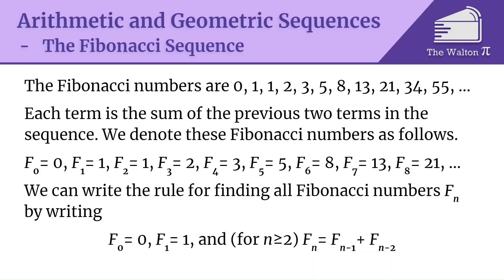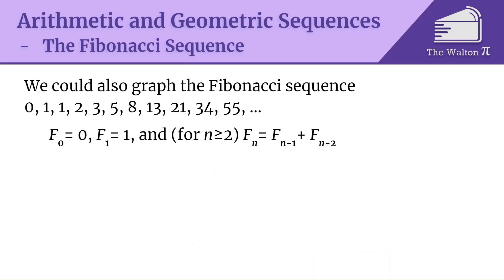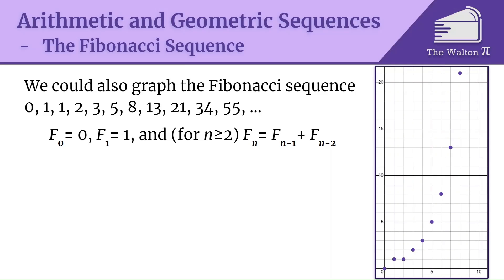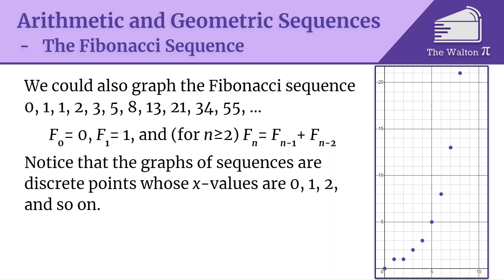We are just writing these down using our rule for what these different terms are representing. We can also graph the Fibonacci sequence, where if we graph this we get this plot for the first several points, and you might notice that graphs of sequences are discrete points. We have a whole bunch of different points, but we don't have any line segments that connect them.